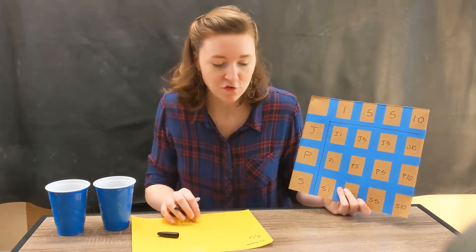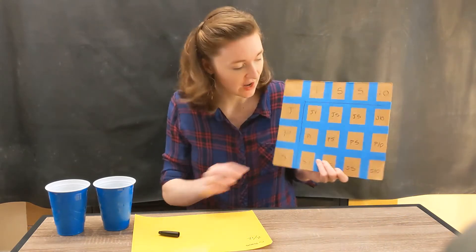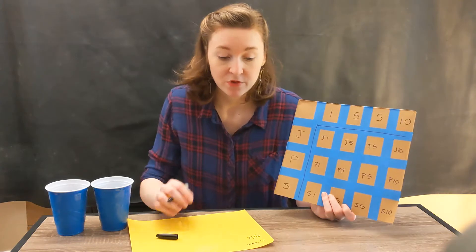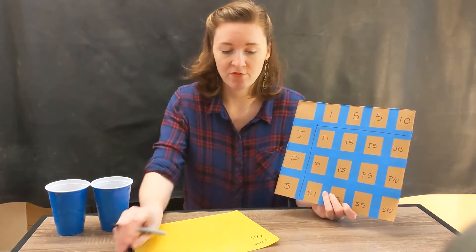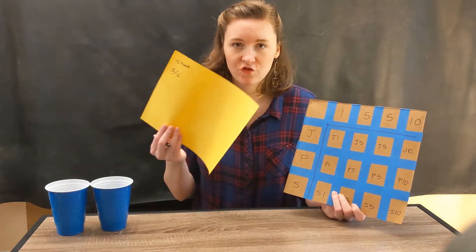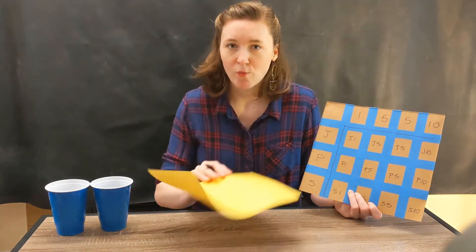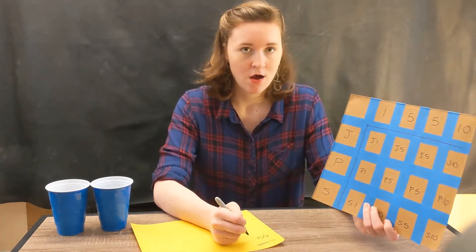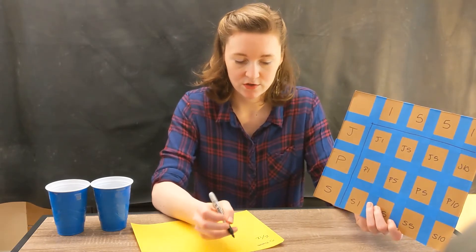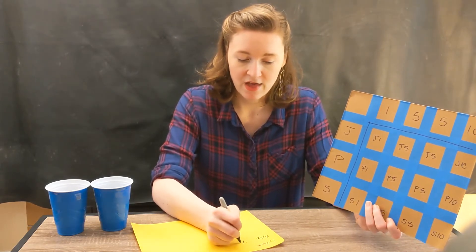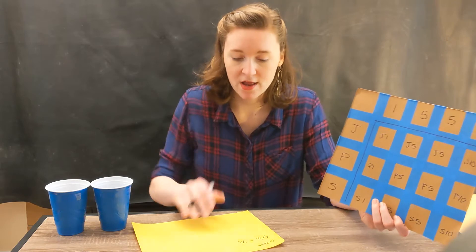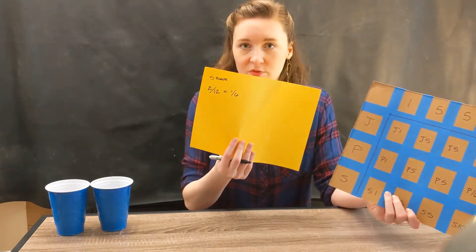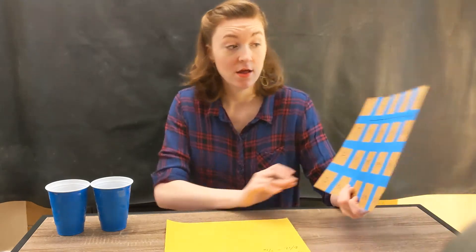So we had a two in twelve chance of getting five push-ups. So can we simplify that fraction at all? Two and twelve. Is twelve divisible by two? Let's think. I think six times two is twelve. So that means we had a one in six chance of getting five push-ups. So that's not that likely.